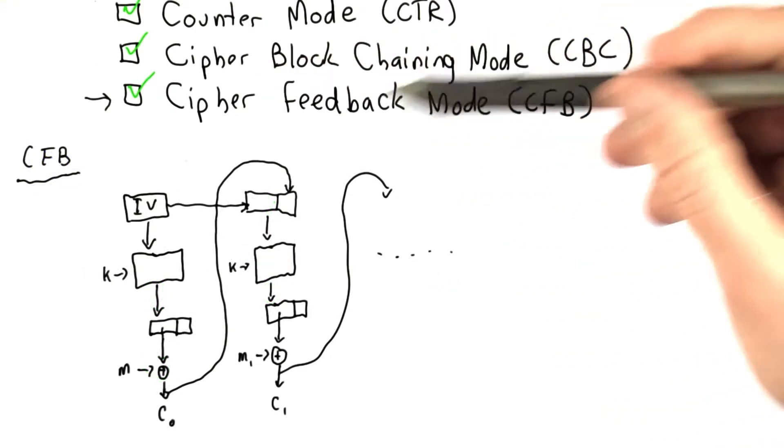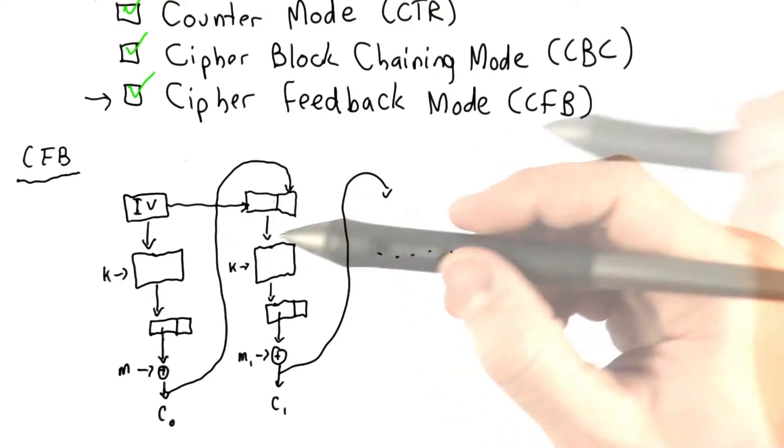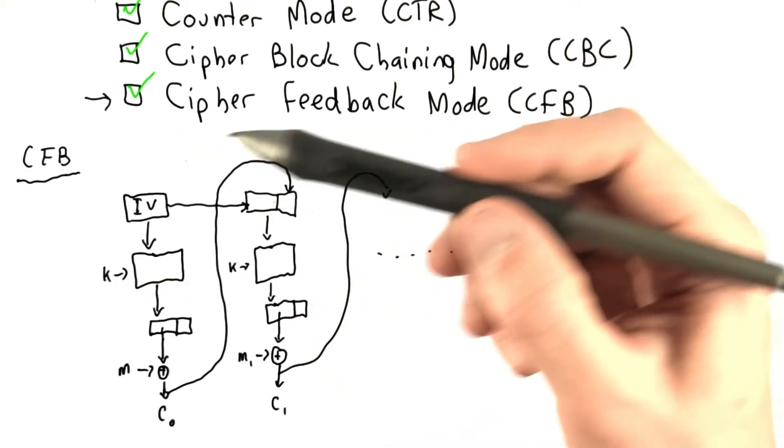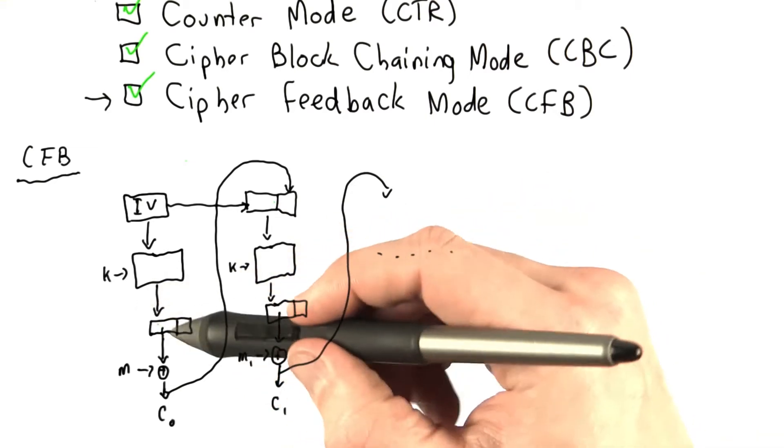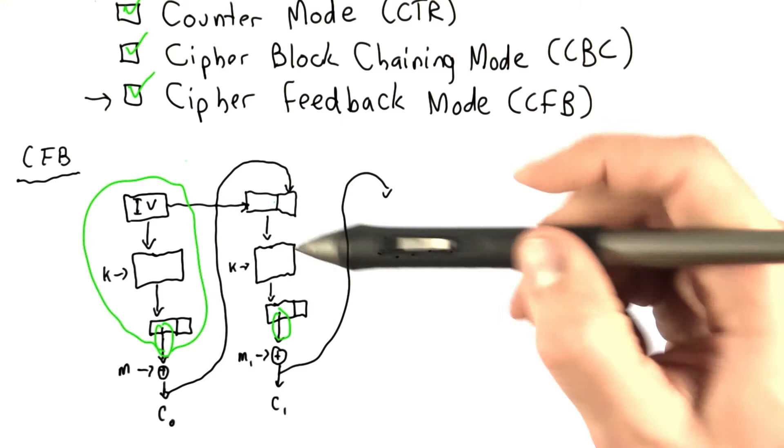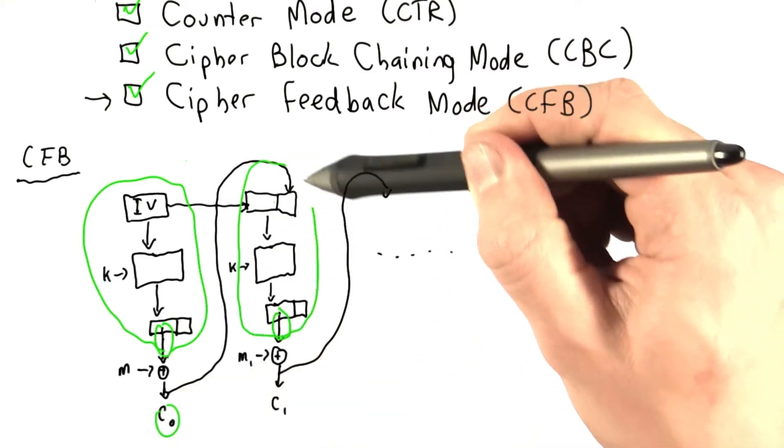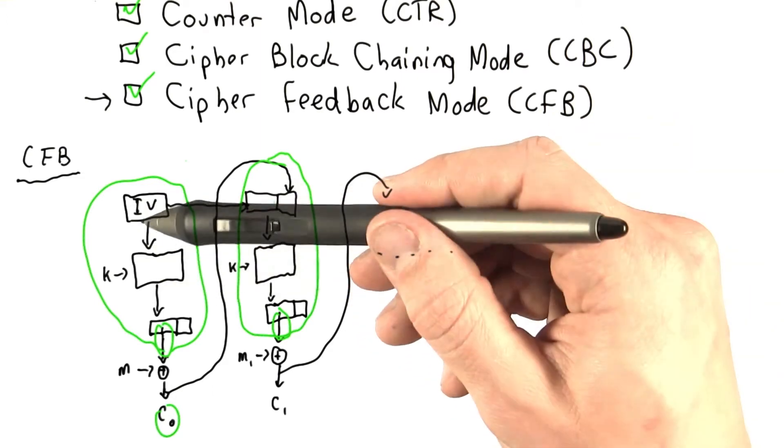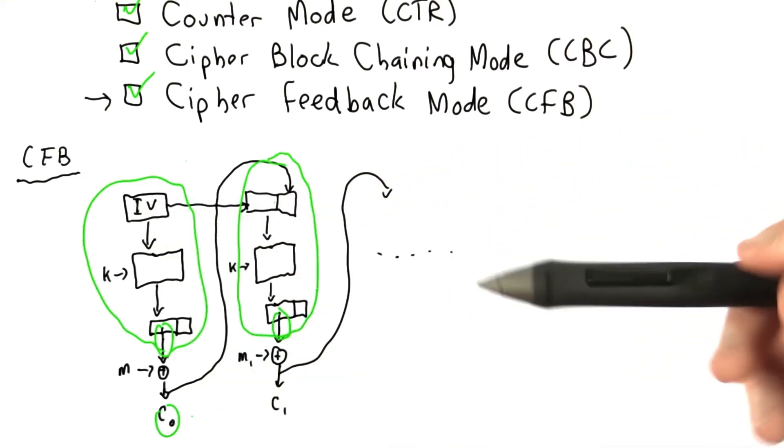Similar to cipher block chaining mode, the cipher feedback mode is decryptable in parallel. The idea is very similar to the two modes we just discussed. We need to calculate the input into the XOR. This entire chain is known in advance. From CNOT, we have this entire chain, which is also known in advance. And we can calculate all these inputs into the XOR in parallel and decrypt our message.